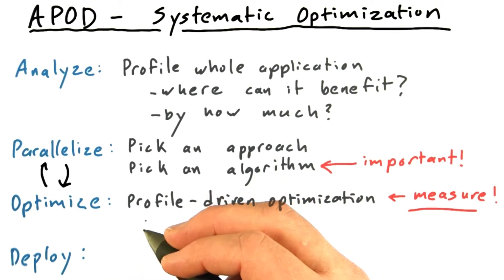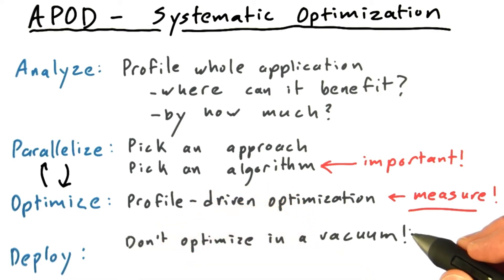When you're working on a real code, it's a really bad idea to optimize in a vacuum. What I mean by this is that you can easily spend tons of time adding tons of unnecessary complexity to your code, speeding up a kernel way past the point where it's no longer a bottleneck.